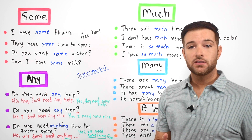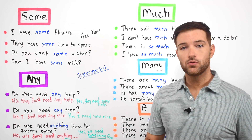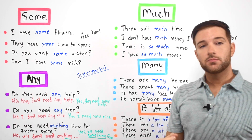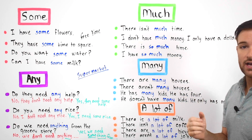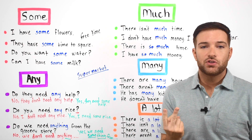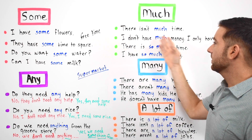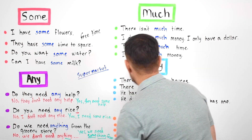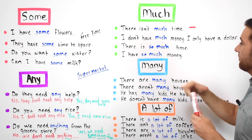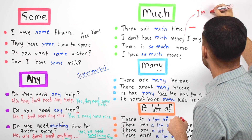Now let's look at some other related words that will come in handy. The word 'much' is used with uncountable nouns in negative statements in English. For example: 'There isn't much time' — meaning you don't have a lot of time to do something. Another example: 'I don't have much money — I only have a dollar.' When you don't have a lot of money, you can say 'I am broke.'